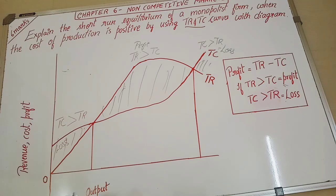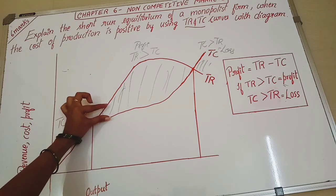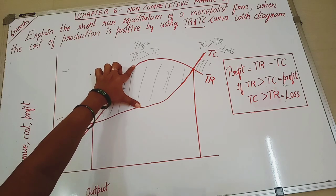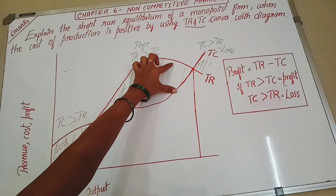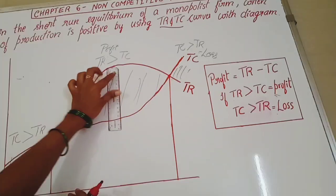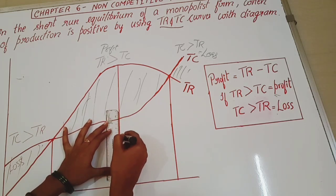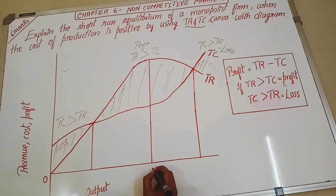So we have three sections. Starting with loss, middle is profit. Then again the firm is going to loss. Now we will divide this profit section. Here there is less profit, here little more profit, here again more profit. The space is increasing. Here is the highest profit. After that, profit is decreasing. So which is the highest profit? This portion where it is highest. That is my maximum profit.